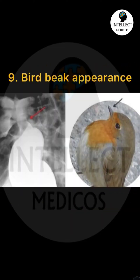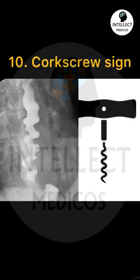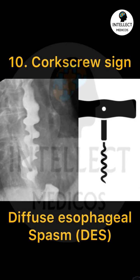Ninth, bird beak appearance, seen in achalasia. And tenth, corkscrew sign, seen in diffuse esophageal spasm. I hope this was helpful for you.